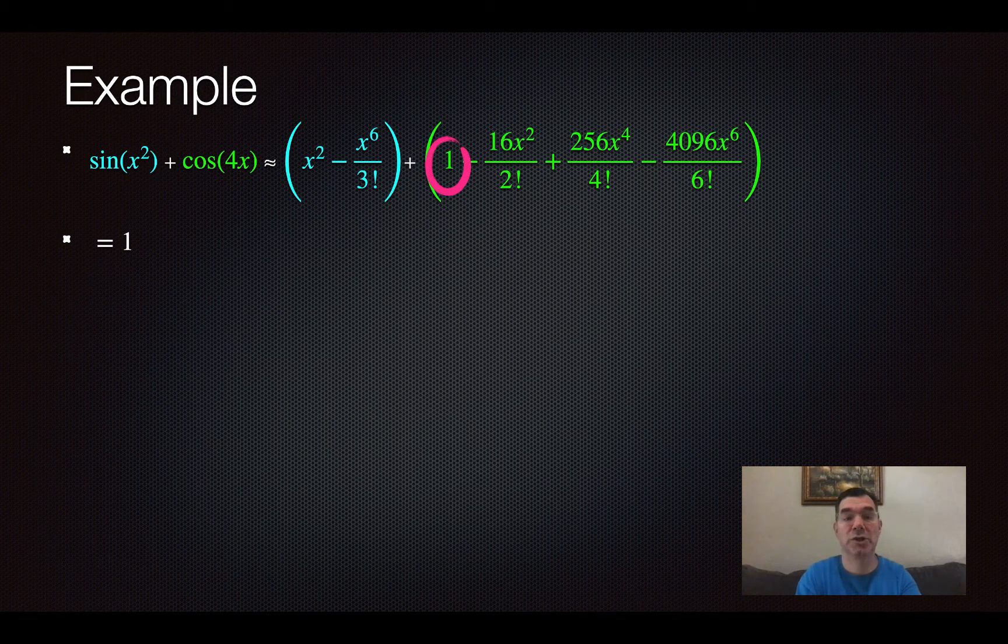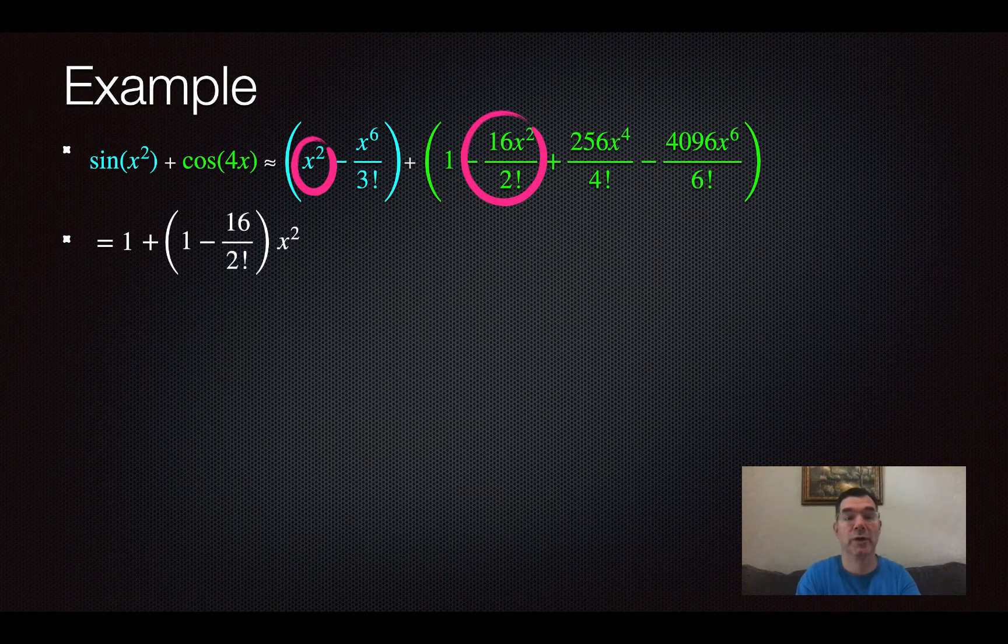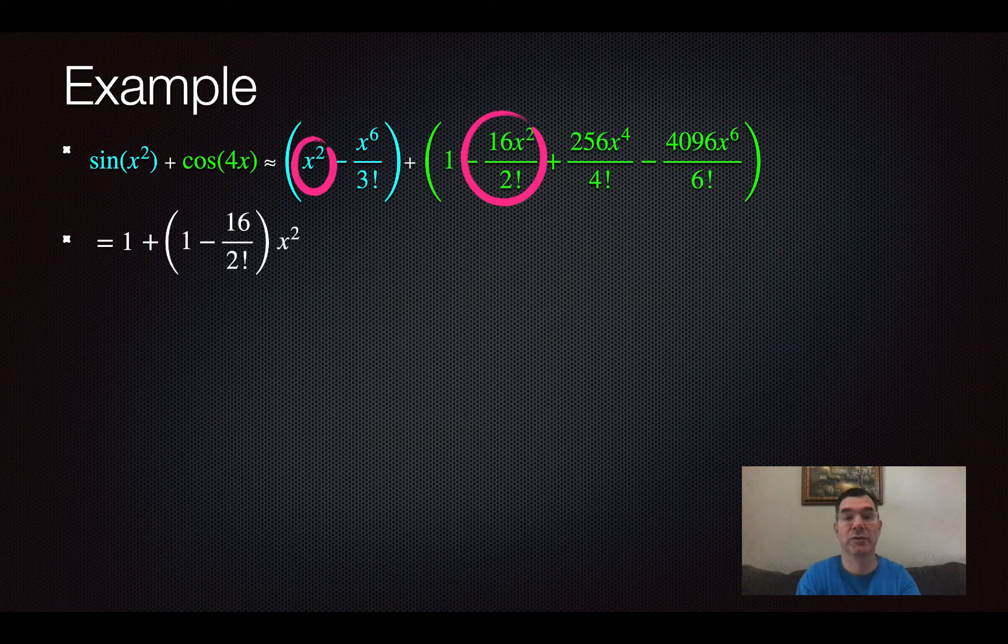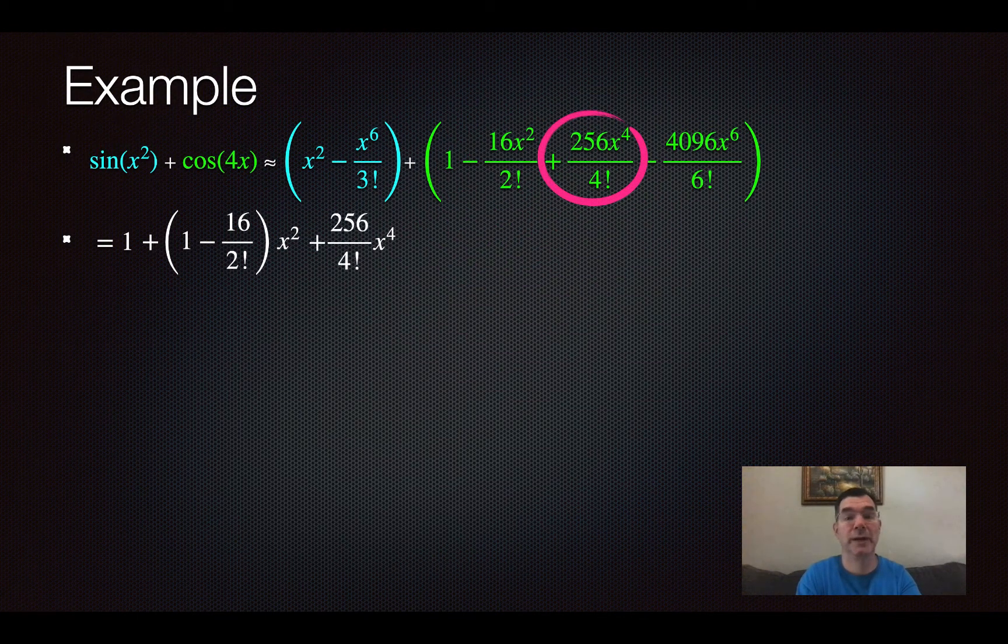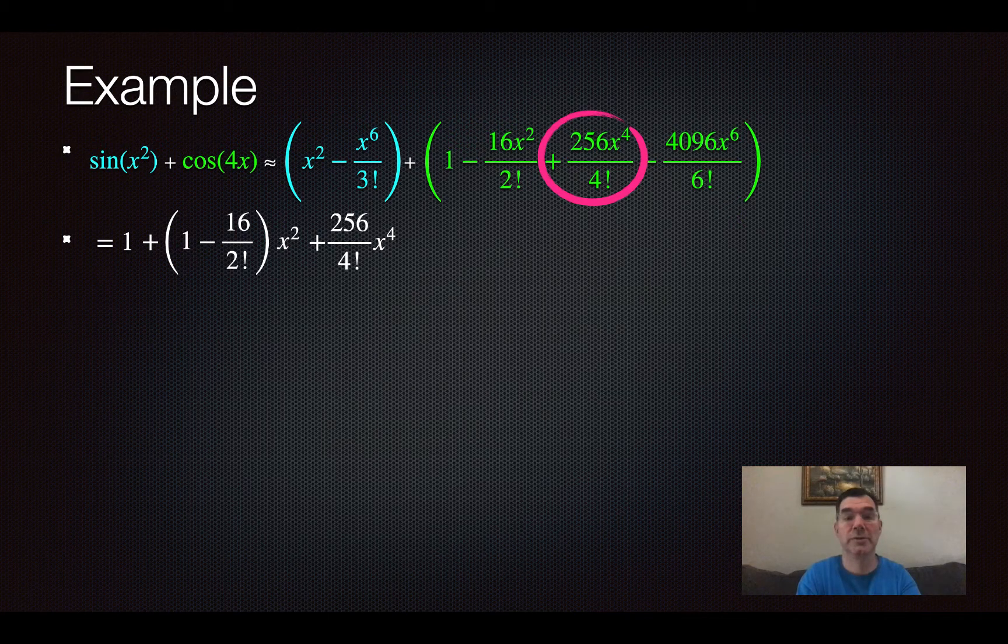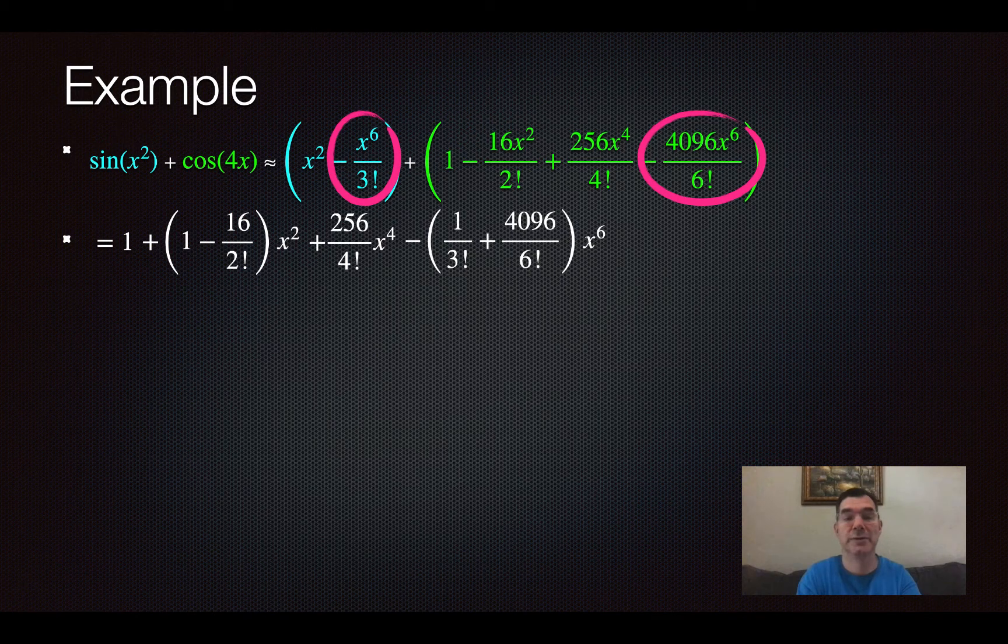So my constant term is just 1. I don't have an x term, so I will turn my attention to the x squared terms and I have two of them, there's one with a coefficient of 1 and the other one has a coefficient of negative 16 over 2 factorial. Then I don't have an x cubed term, but I do have an x to the 4th term, so that will be my next term. And then my last two terms will be a combination of the terms that have x to the 6 in them, and I'll just put the coefficients in parentheses like that.